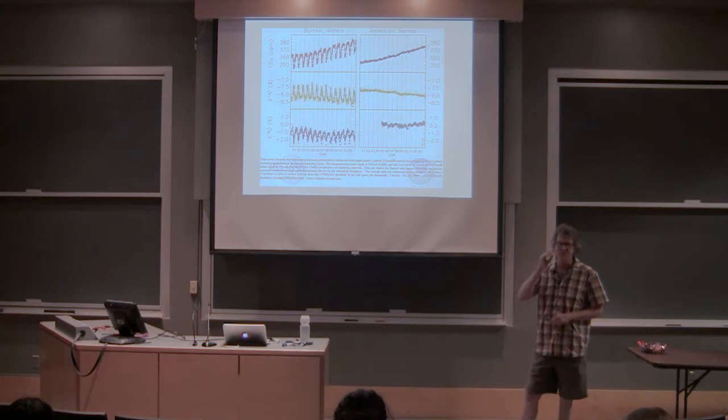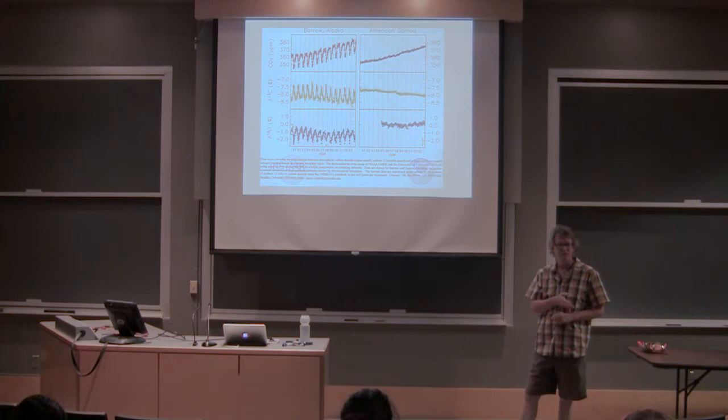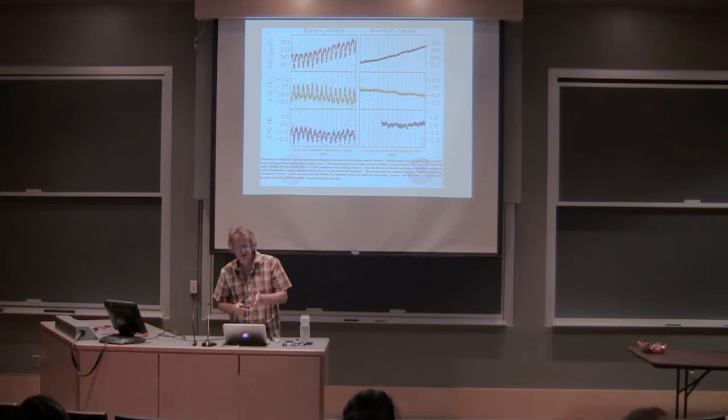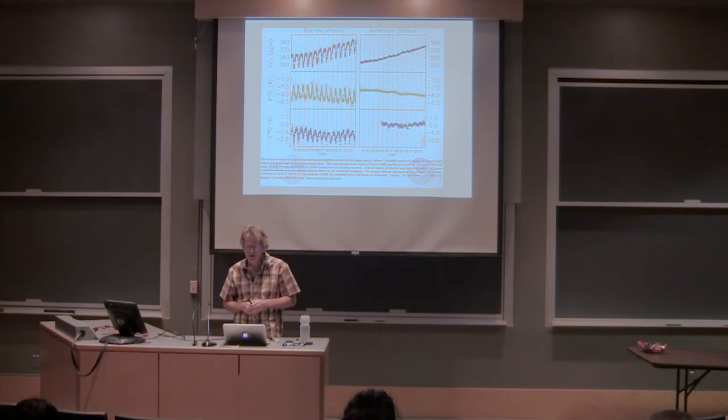On the bottom is oxygen isotope ratio. There's an oxygen signal as well—I'm not going to talk much about that. The oxygen isotope of CO2 is controlled by entirely different things, almost entirely different from the carbon isotope ratio. Anybody got a guess? What's the biggest factor controlling the oxygen isotope ratio of CO2? Interaction with liquid water, exchange of oxygen atoms through an equilibrium reaction.